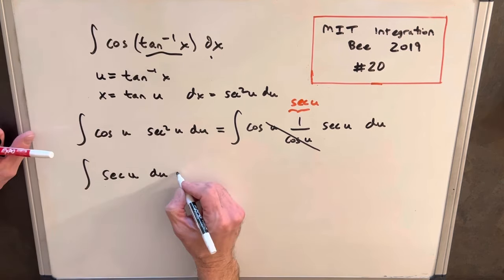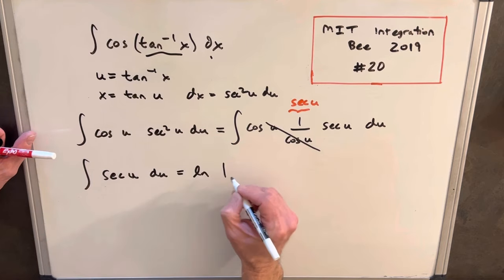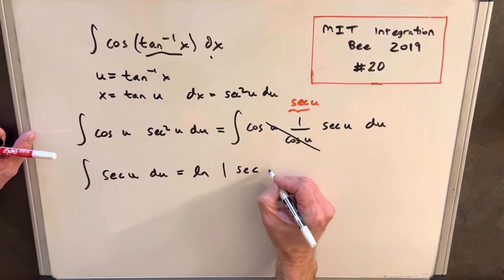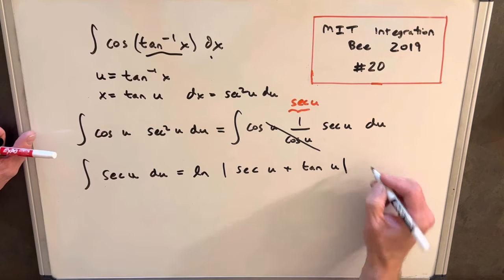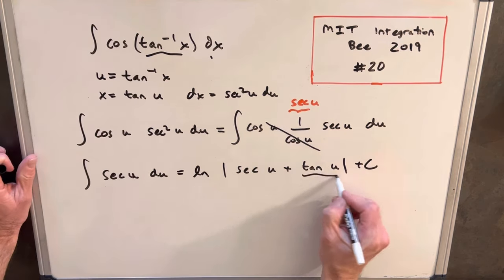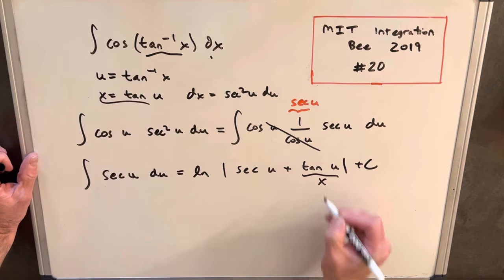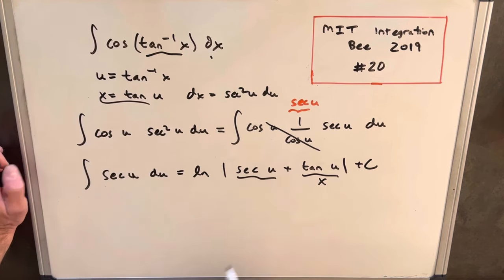But we know what that is. That's a pretty common integral. That's ln absolute value of secant u plus tan u plus C. And we already know what tan u is because we defined that to be x up here. So now we just need to find out what secant is.